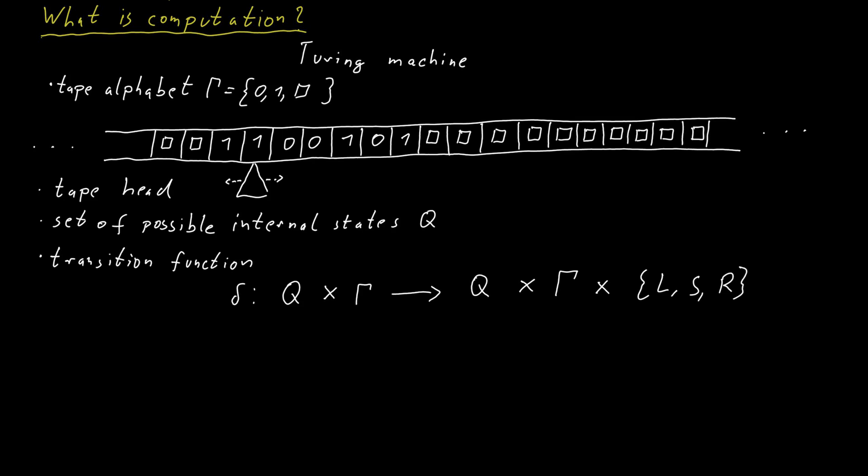We can also write this transition function in the form of a big table. And here the rows of the table would be the different internal states and the columns of the table would be the characters from the tape alphabet. And then we can look up in this table what the action should be. So if I have internal state Q and I read a zero say, then this table tells me what I should do. The contents of the cell in the table would be something like, oh, you should switch to some state Q prime. You should write a one in place of the zero and you should move your tape head to the right.